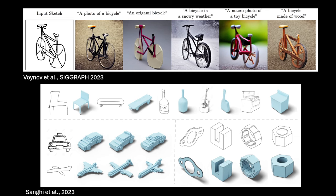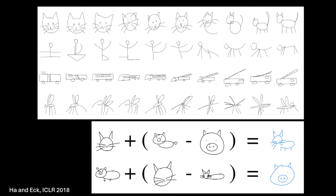There's also work directly in sketch space. Ha and Eck, ICLR 2018, applied a VAE to sketches: train on people's cat sketches, move around in latent space, and every point corresponds to a sketchy cat drawing. Transitions are reasonable — the cat gains a body and tail as you move right. You can even do latent space arithmetic: add a pig head with a pig body, subtract the pig face, and end up with a cat body.